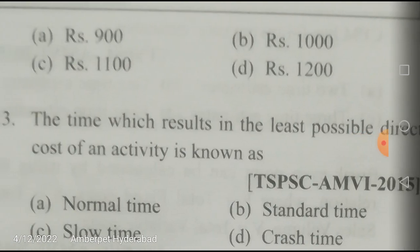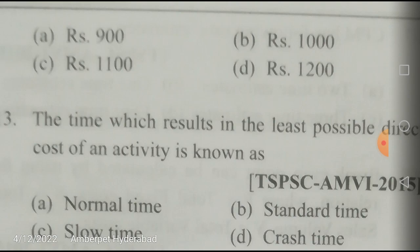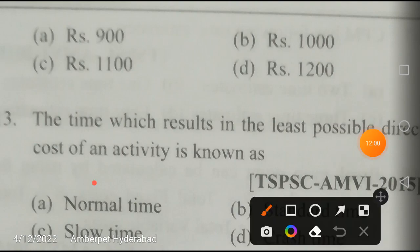The time which results in the least possible direct cost of an activity is known as normal time — not standard time, slow time, or crash time.